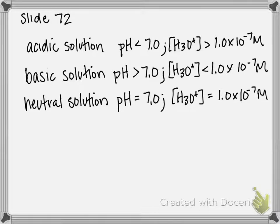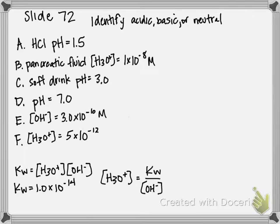So using this information, using this knowledge, now we're going to move on to the slide 72 example, which has A, B, C, D, E, and F, and it wants us to identify each as either acidic, basic, or neutral.